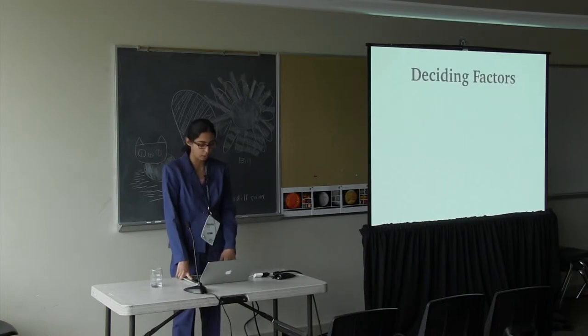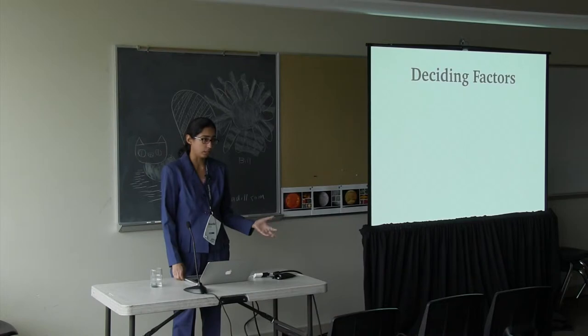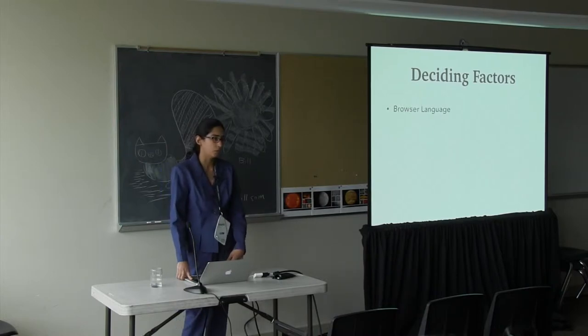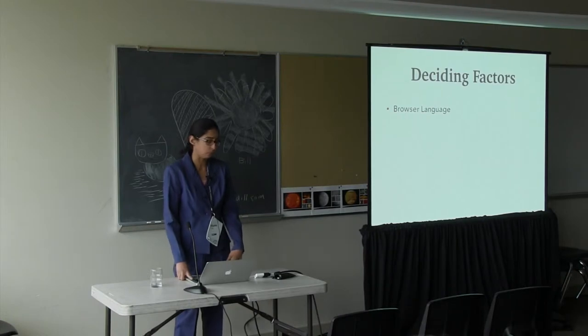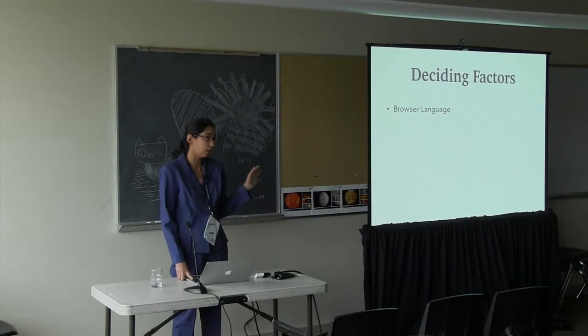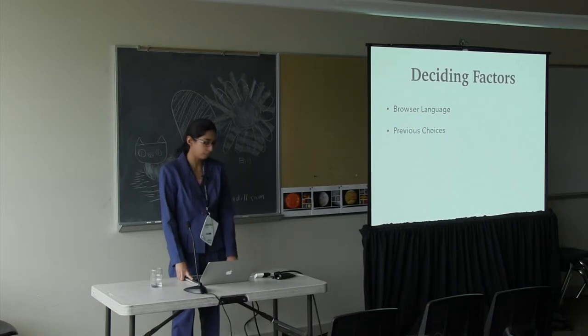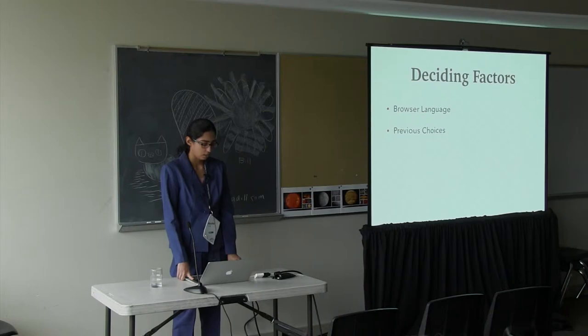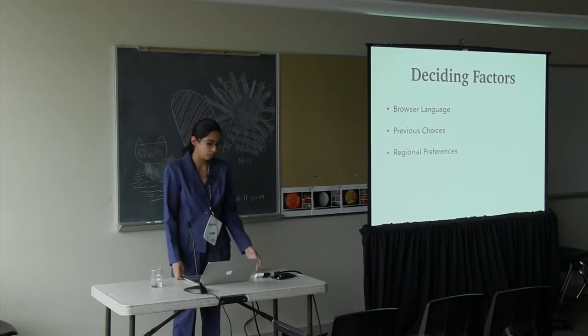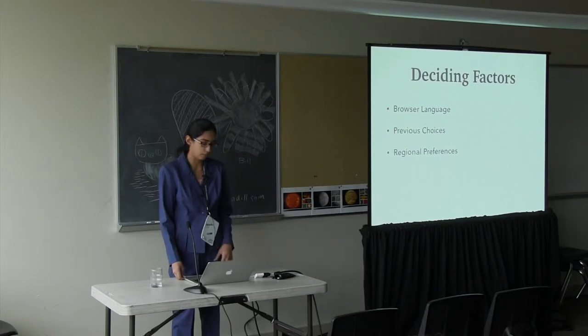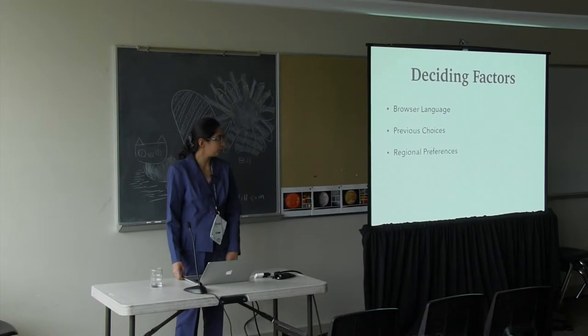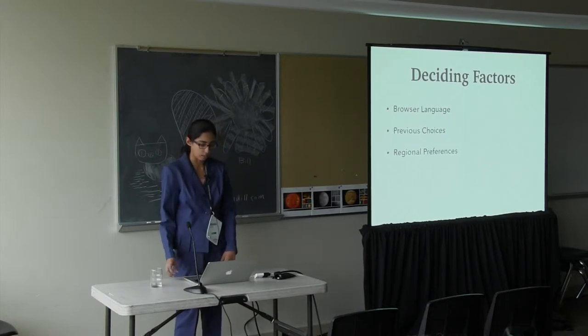There were some deciding factors that we consider in making the list short. The first one is the browser language, the most obvious choice. The language that your browser needs is the one we definitely try to incorporate in the list if the article is supported in that language. Then we have previous choices. The previous choices of the user are stored in the user's browser itself as cookies. We accommodate up to five previous choices as of now. Then we have regional preferences. This is the strongest point. We find out regional preferences using the IP address. The data for regional preferences comes from the CLDR.